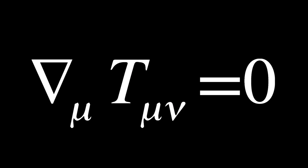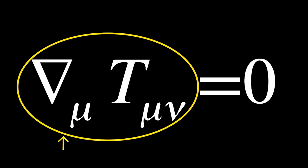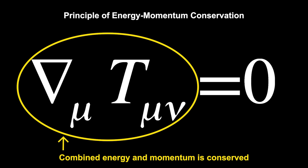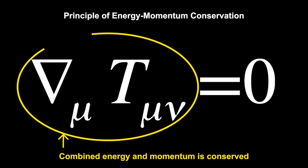To be more precise, the term on the left is called the covariant derivative, but for simplification pertaining to what we are discussing, you can think of it as the derivative. So the simplified way to think of this equation is that the change in energy and momentum remains zero. This is called the principle of energy momentum conservation. Note that this equation is not saying that energy stays the same, only that the combination of energy and momentum remains the same. In other words, only the combined energy and momentum is conserved.